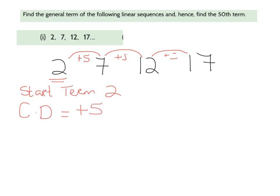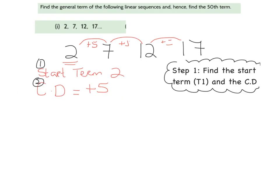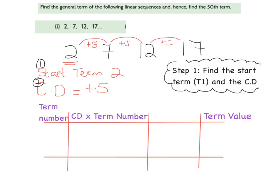So step 1 in finding the rule for any general sequence or any linear sequence, you must find number 1, the start term, and number 2, the common difference. So that is step 1 always. My next step is to lay out a table that will help me figure out the rule of this sequence. Okay, and this is how all of our tables must be laid out. They must consist of 4 columns. The first one is term number. The second one is CD, which stands for common difference multiplied by term number. And the last one is term value.